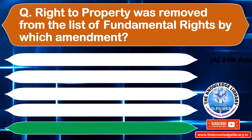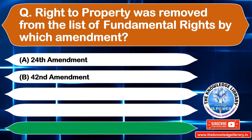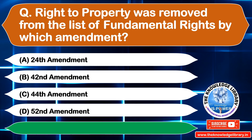The next question is: right to property was removed from the list of fundamental rights by which amendment? Option A: 24th Amendment, Option B: 42nd Amendment, Option C: 44th Amendment, Option D: 52nd Amendment. The correct answer is Option C: 44th Amendment.